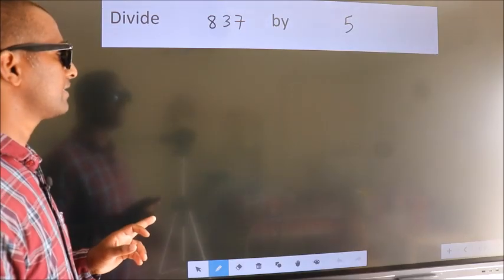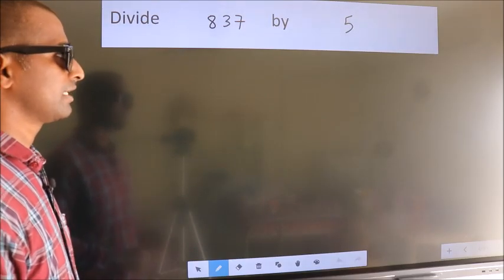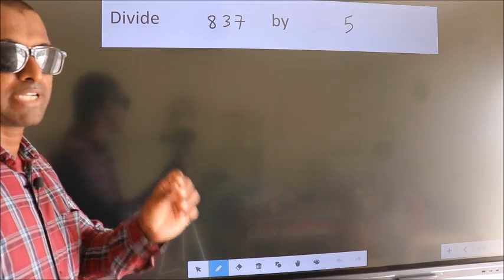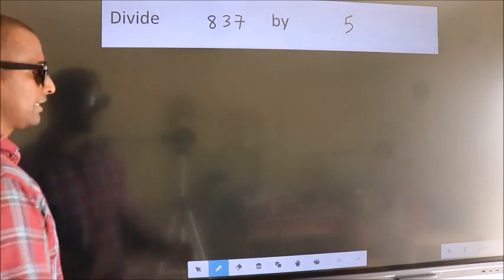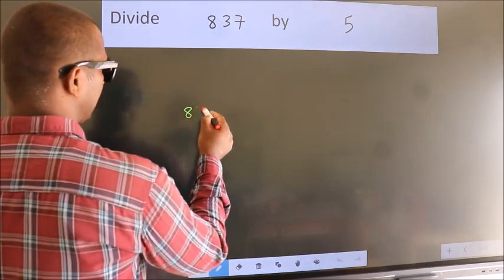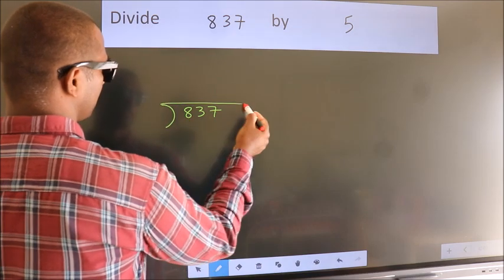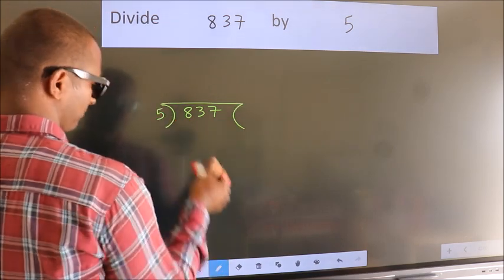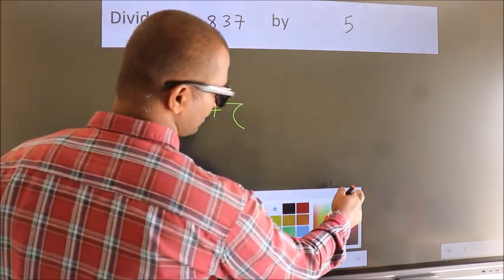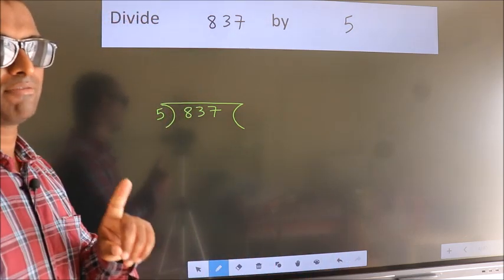Divide 837 by 5. To do this division, we should frame it in this way: 837 here, 5 here. This is your step 1.